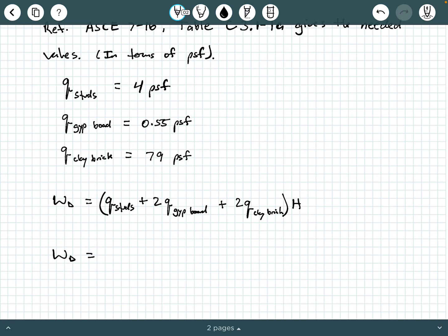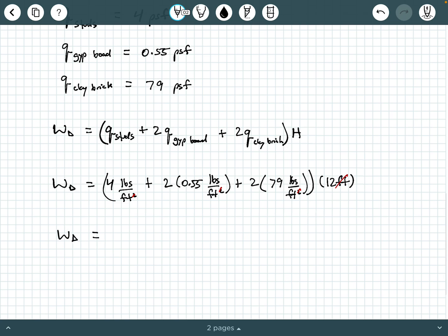Substituting these values in, W dead equals 4 pounds per square foot plus 2 times 0.55 pounds per square foot plus 2 times 79 pounds per square foot all times 12 feet. You can see these feet cancel with one of these feet here. Finally, you'll have a W dead altogether of about 1,960 PLF or 1.96 KLF.